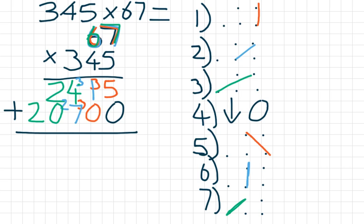And then obviously we've got to do column addition there. Five add nothing. One add nothing. Seven add four is eleven. Two add one is three. Two add nothing is two. Twenty-three thousand one hundred and fifteen.